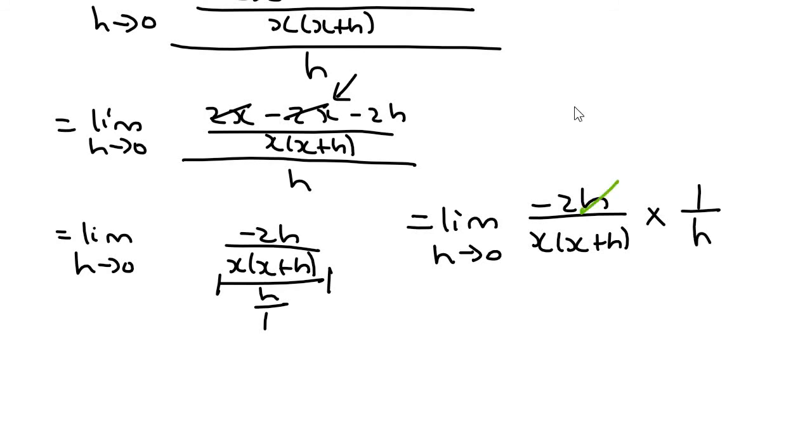Have a look here. These h's would cancel. And so we can then say minus 2, because I'm just multiplying across, over x, x plus h.